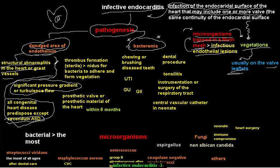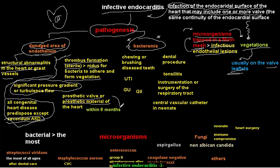Thrombus formation — even sterile thrombus — provides a nidus for bacteria to adhere and form vegetations. A prosthetic valve or prosthetic material in the heart acts as a foreign body, helping bacteria adhere and leading to infective endocarditis, mostly within six months of placement of the prosthetic valve.